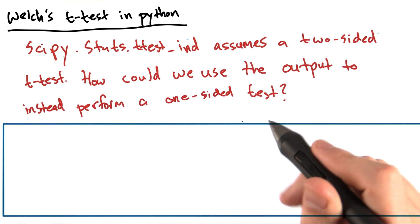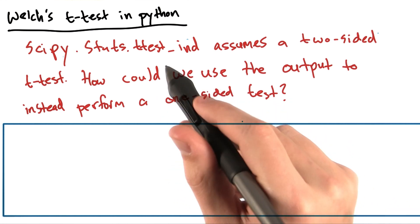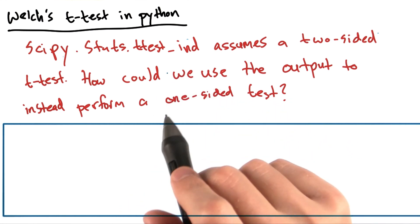Here's a hint. We can still use the t-value and p-value that this function returns. Don't worry, this won't be graded.